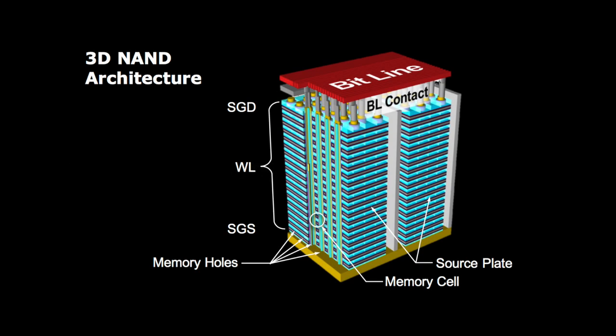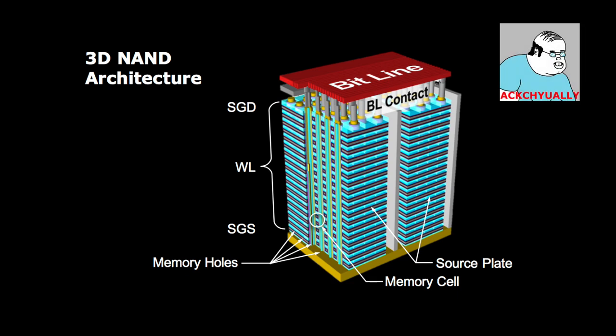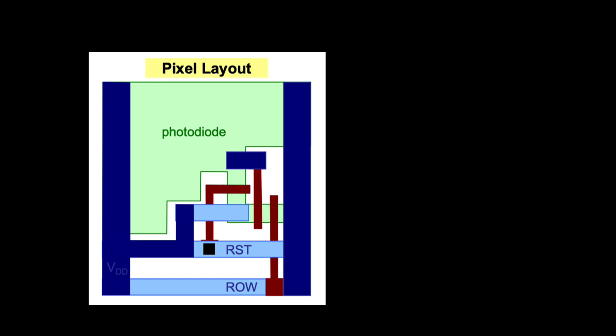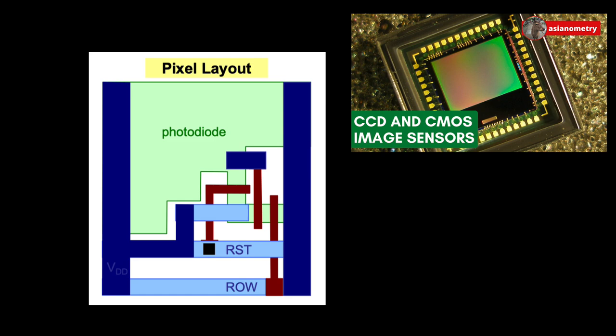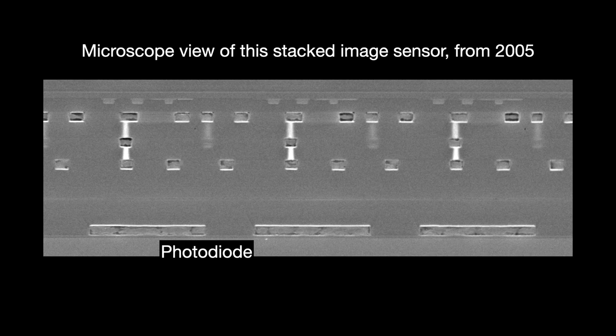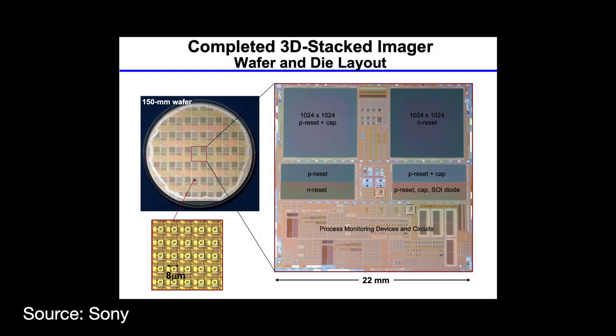The first TSV-connected non-memory die stacks came out of the CMOS image sensor world. Today's CMOS image sensors are made up of active pixels, which have a photodiode for collecting light as well as extra transistors for complementary functions. One big concern with these active pixels is the fill factor — the percentage of physical space in a pixel allocated for collecting light. 3D die stacking lets the photodiode get much bigger, raising the fill factor to something closer to 100%. Sony announced a breakthrough in stacked image sensors in 2005 and started producing them in 2012.